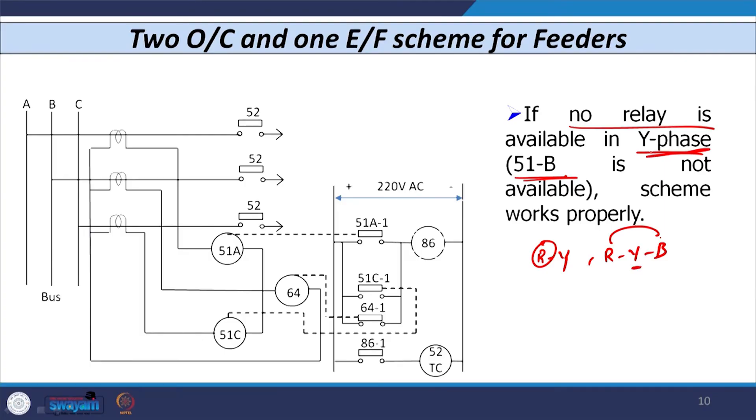The same applies to faults involving ground — line to ground, double line to ground, and triple line to ground. If you remove any one of the three phase units, the scheme still works perfectly well. The only disadvantage of this scheme is that whenever a star-delta transformer is involved — meaning any distribution feeder feeds to a transformer — there can be a possibility of delayed time of operation.